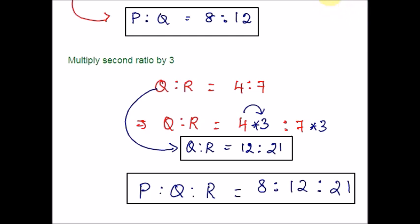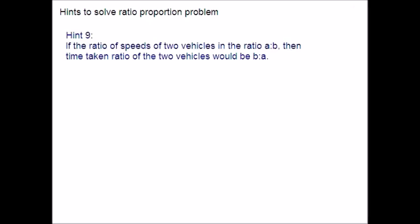Hint 9: If the ratio of speeds of two vehicles is A is to B, then the time taken ratio of the two vehicles to cover the same distance would be B is to A. For example, if the ratio of speeds of two vehicles is 2 is to 3, then the time taken ratio to cover the same distance would be 3 is to 2.